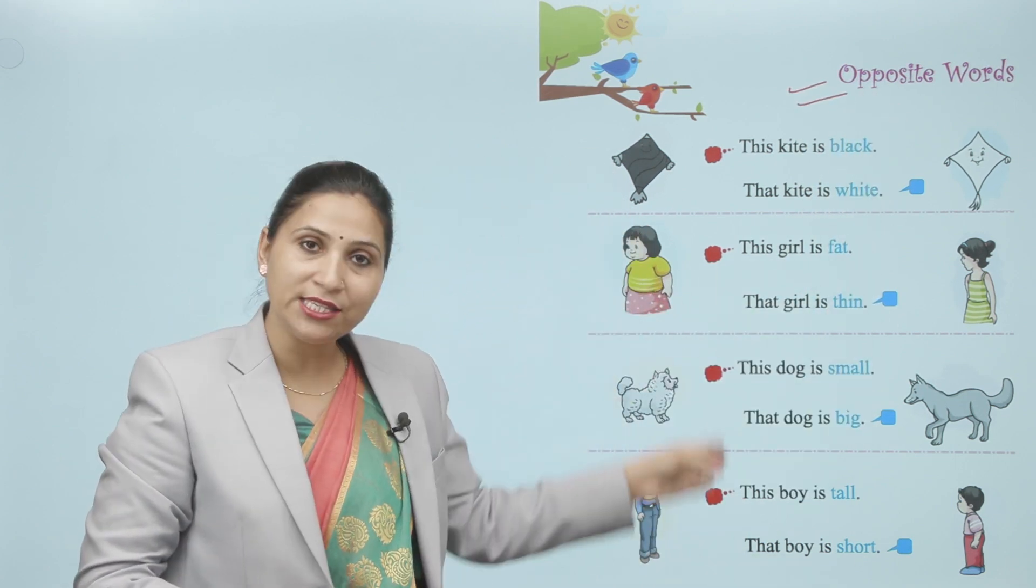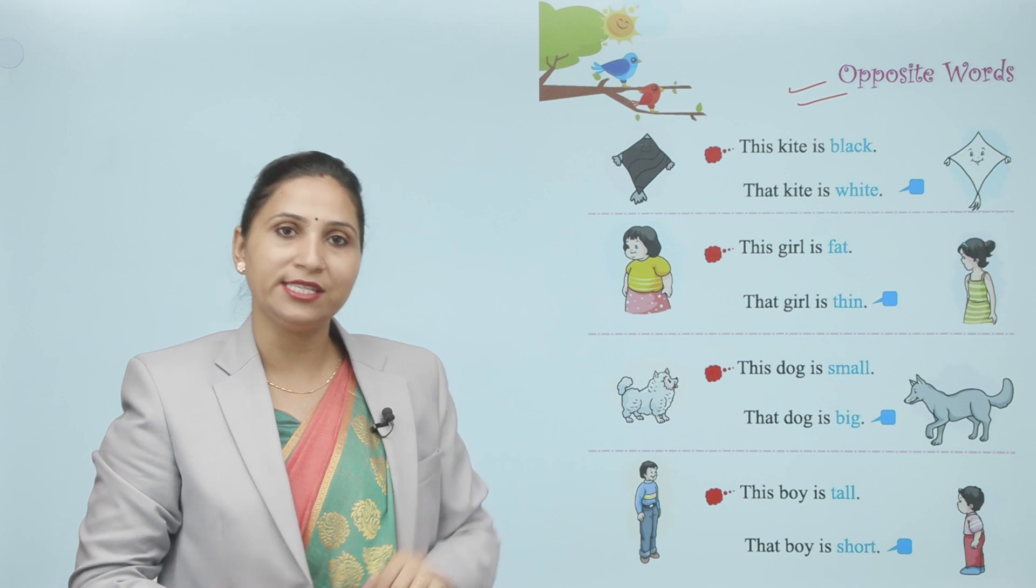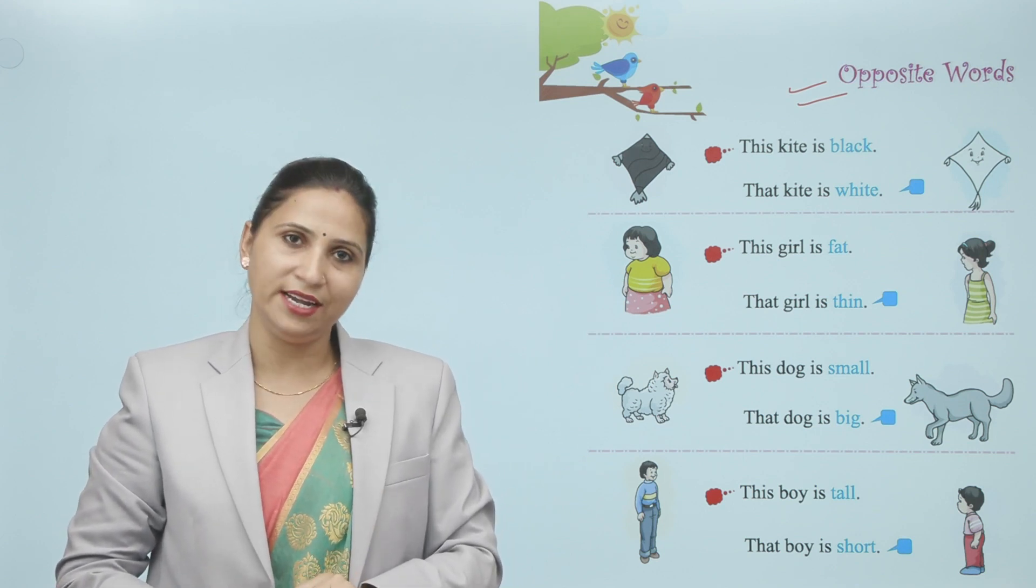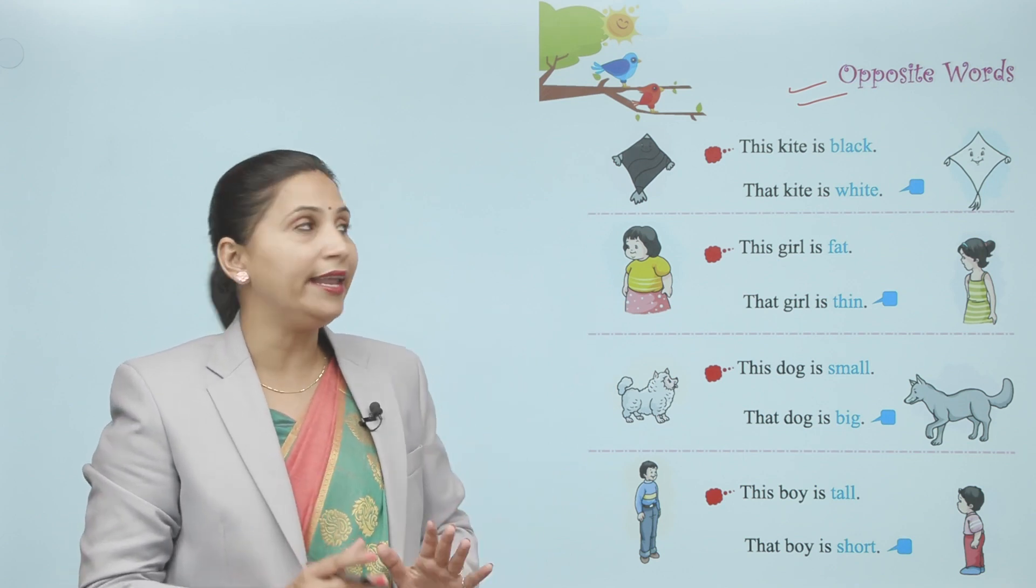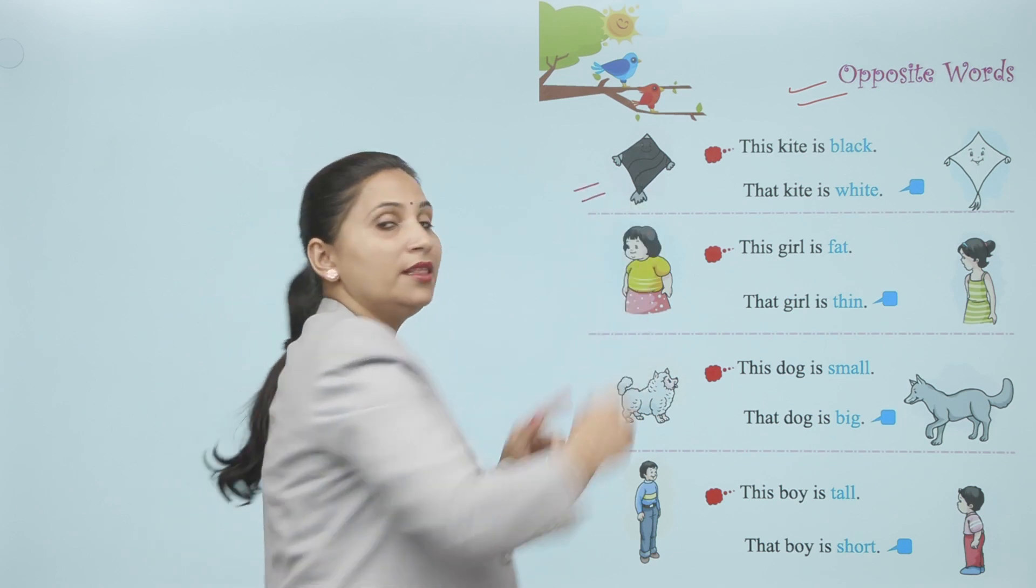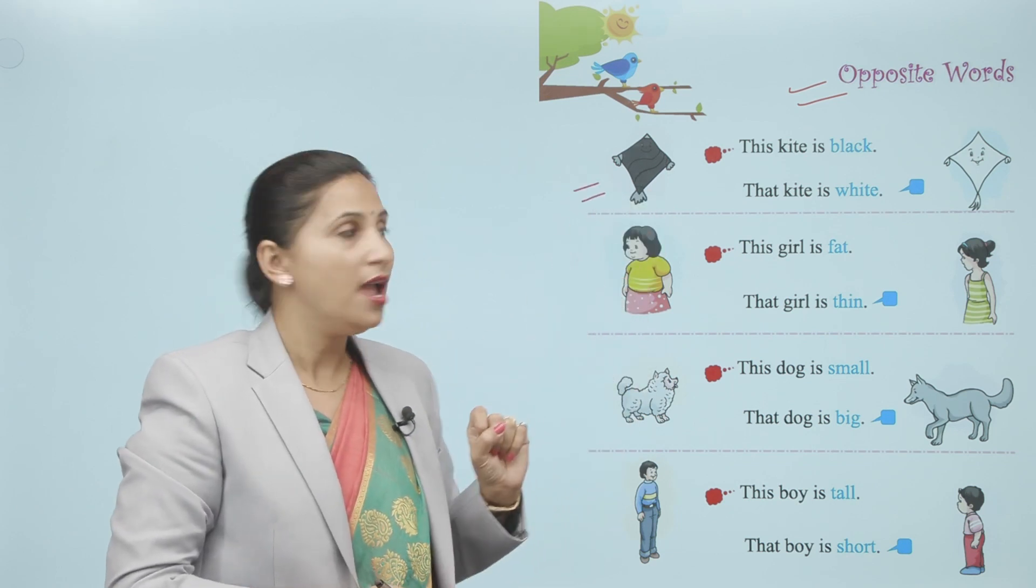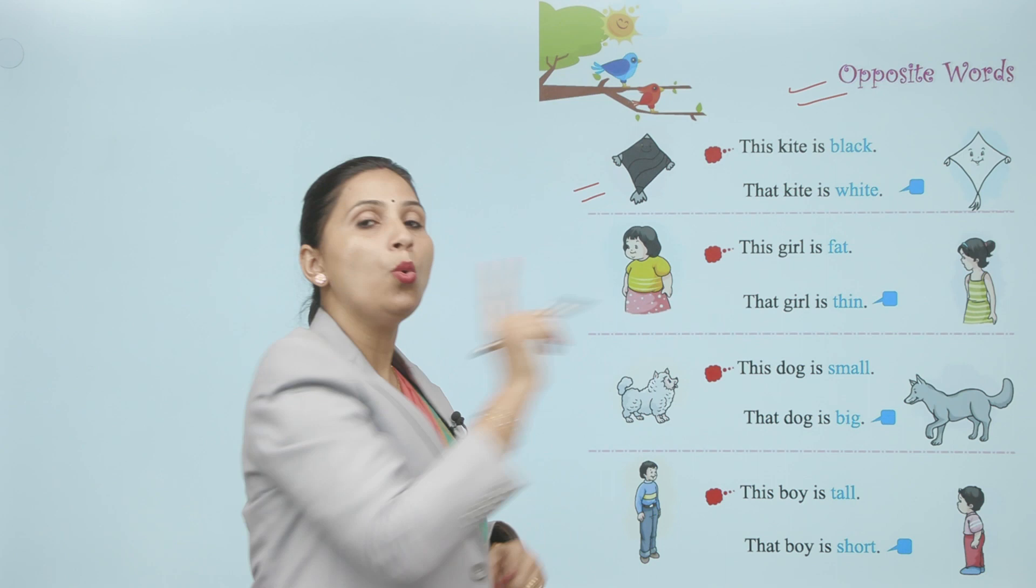So here are some sentences you have to mention. So we will start from first sentence. First sentence is this kite is black. This kite is black and that kite is white.